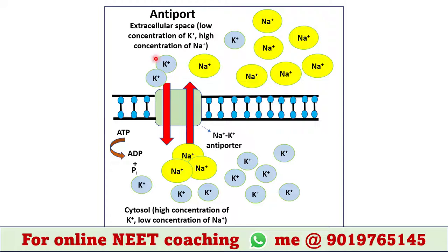Let's talk about antiport now. In this transport technique, two types of substrates cross the plasma membrane in opposite directions. An example is the sodium-potassium antiporter, which is present in every cell of our body. It maintains low intracellular sodium and high intracellular potassium. This transporter moves three sodium ions out and two potassium ions in, against the concentration gradient. It is an active transport and hence requires energy from ATP hydrolysis.